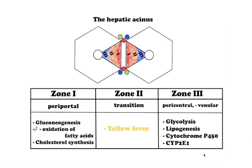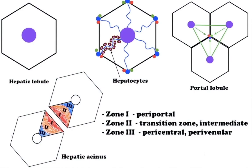The portal lobe contains portions of three adjacent hepatic lobules, having a portal vein at its center and a central vein peripherally at each corner. It has a triangular shape and its main function is bile secretion.